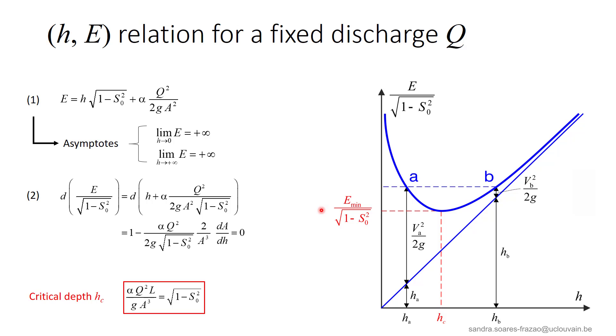We see also that there are two possible water depths for a given level of specific energy here. The first one, represented by point A, is below Hc. We see that the water depth is very small and that the velocity is large, as V square over 2G is large. The second one is represented by point B with a large water depth, but a small velocity.